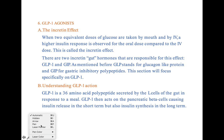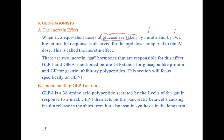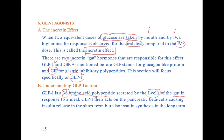GLP-1 agonists: when two equivalent doses of glucose are taken, one orally and one IV, there is a higher insulin response with the oral dose — that is the incretin effect. Two incretin hormones are responsible: GLP-1, glucagon-like peptide, and GIP, gastric inhibitory polypeptide. Here we focus on GLP-1 only. GLP-1 is a 36-amino acid polypeptide secreted by the L cells of the gut in response to a meal. It acts on pancreatic beta cells to cause short-term insulin release and long-term insulin synthesis.